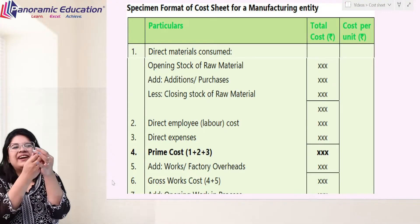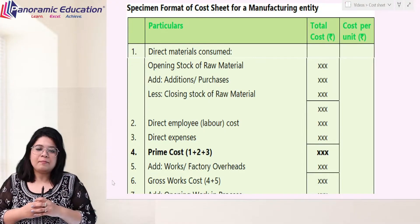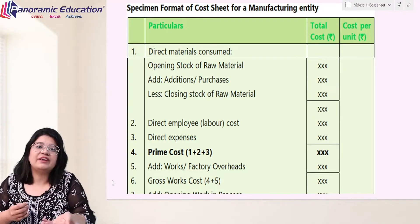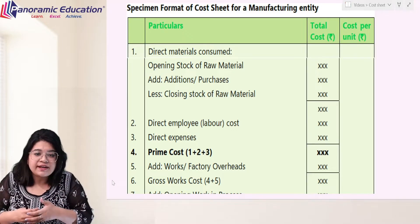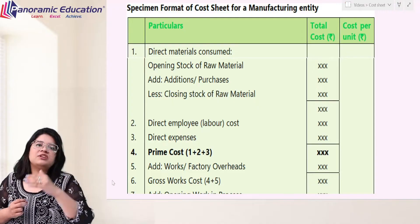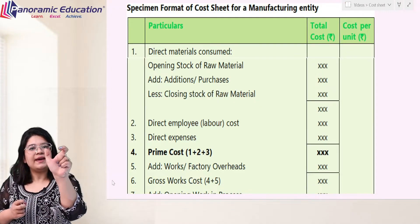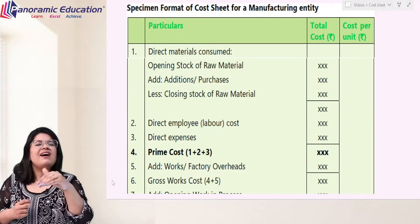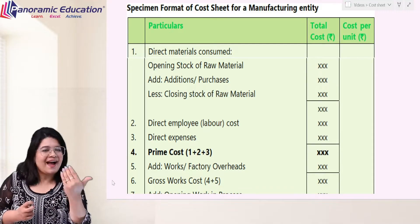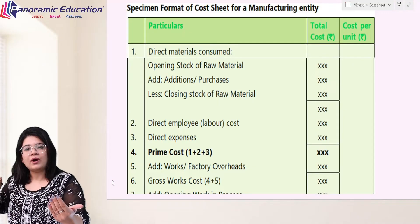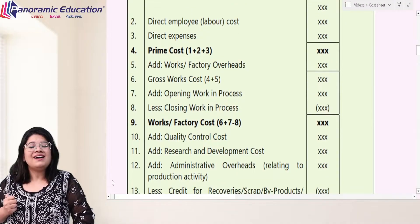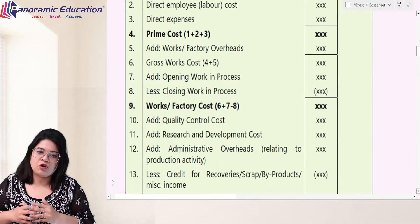Prime cost is my preliminary cost. Then we add our factory overheads. Prime cost and factory overheads together we call works cost or factory cost — this is at the gross level. Opening WIP will be added and closing WIP values will be removed. Then we know the net factory cost or works cost.